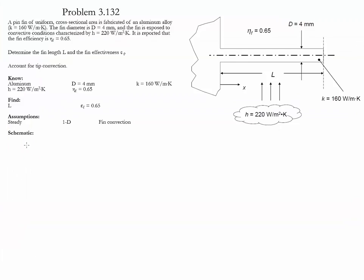The next step in the analysis is to calculate the effectiveness of the fin. The effectiveness equation is given as the heat rate of the fin divided by h, the cross-sectional area at the base, and theta b.